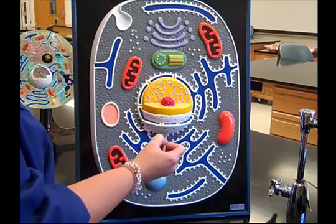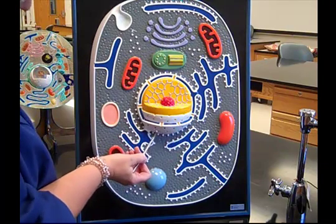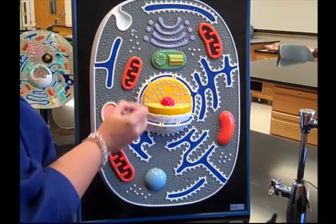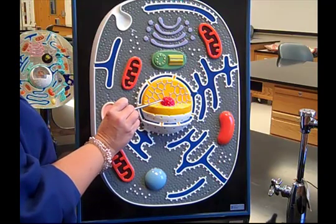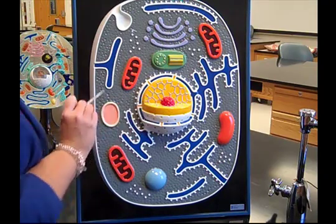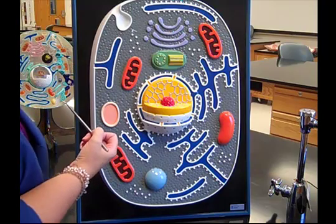We see the centrally located nucleus, nuclear envelope with the nuclear pores. Inside, we have the nucleolus, nice and bright red. We also have the gray latticework structure, that's the DNA or the chromatin.